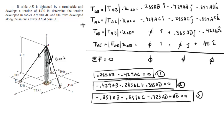We have 4 variables and 3 equations. The missing piece is that we're given the tension of cable AD, which is 1300 pounds. Plugging AD = 1300 pounds into equations 2 and 3 gives us our simplified formulas.